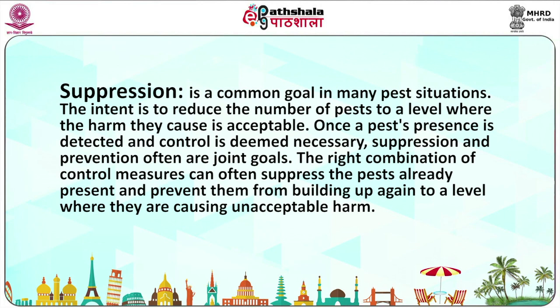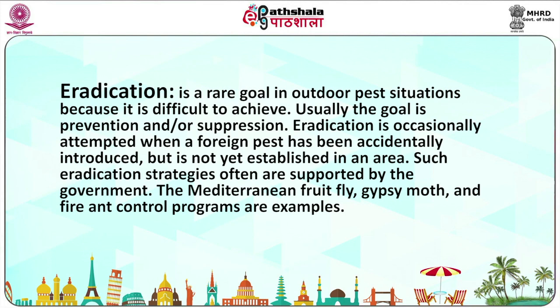Suppression is a common goal in many pest management situations. The intent is to reduce the number of pests to a level where the harm caused is acceptable, once a pest's presence is detected and control is deemed necessary. Suppression and prevention are often a joint goal. The right combination of control measures can suppress pests already present and prevent them from building up again to a harmful level. Eradication is a rare goal in outdoor pest situations because it is difficult to achieve. Usually the goal is prevention and/or suppression.